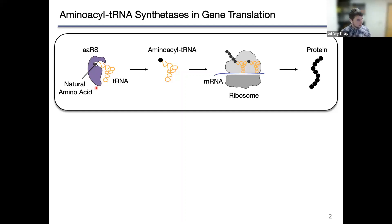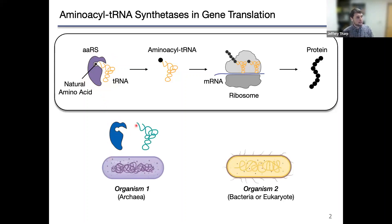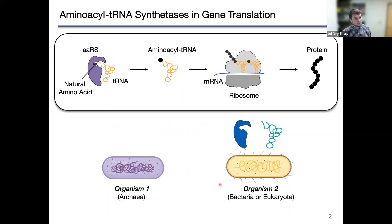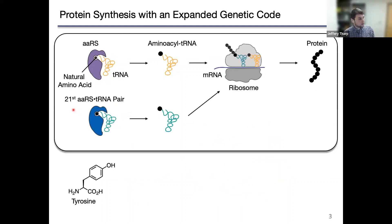A focus of our field, genetic code expansion, is to engineer cells that have additional aminoacyl tRNA synthetase and tRNA pairs so that we can produce proteins containing additional unnatural amino acids. To do this, we take the genes that encode an aminoacyl tRNA synthetase and a tRNA pair, and we transplant these genes from organisms in one domain of life — typically an archaeon — into an organism in a second domain of life, typically a bacterium or eukaryote. By transplanting these molecules, we can generate cells that have a 21st aminoacyl tRNA synthetase and tRNA pair.